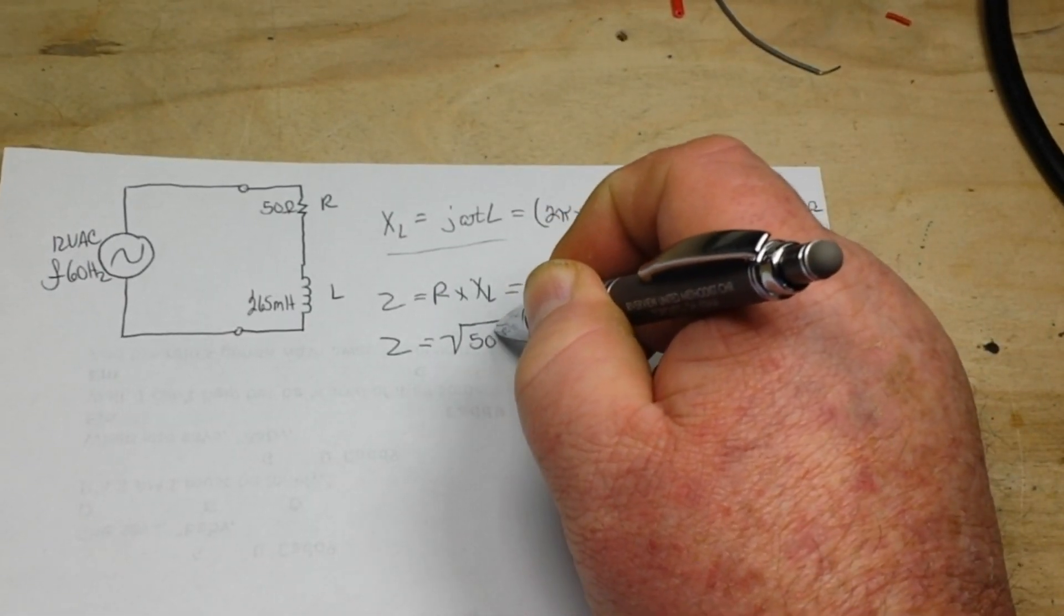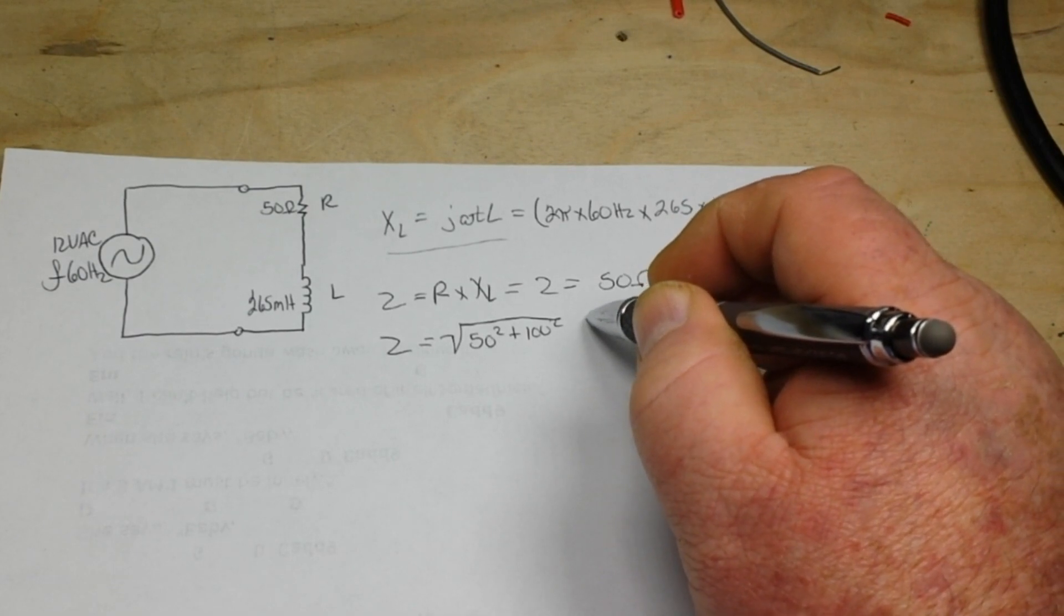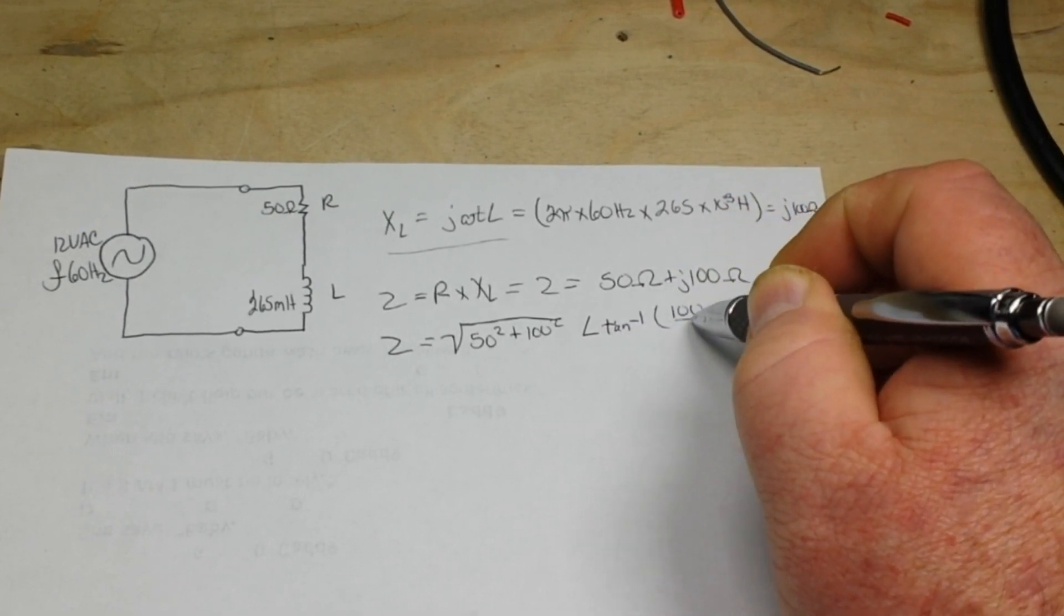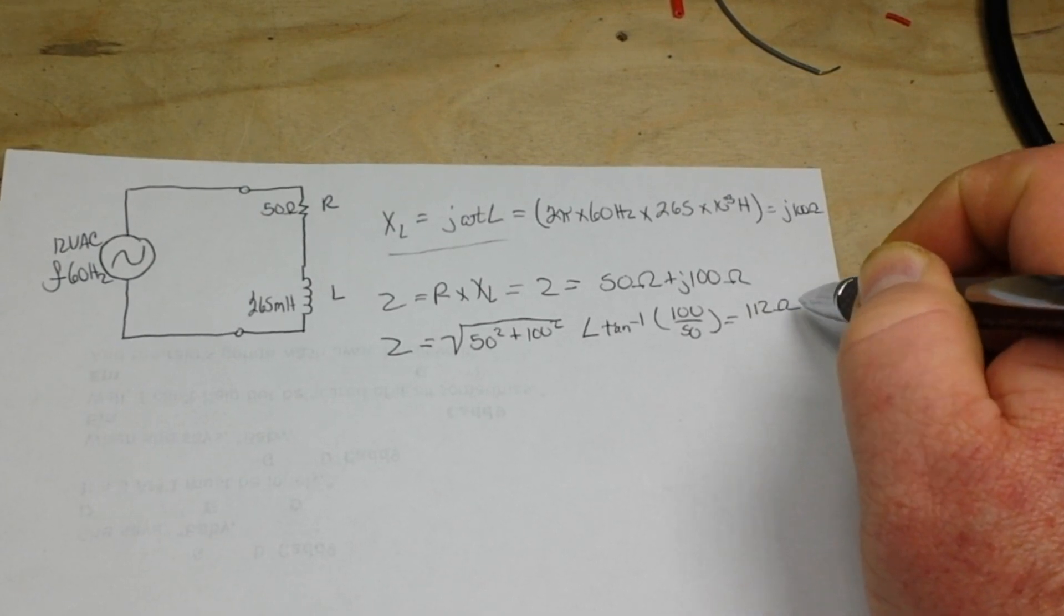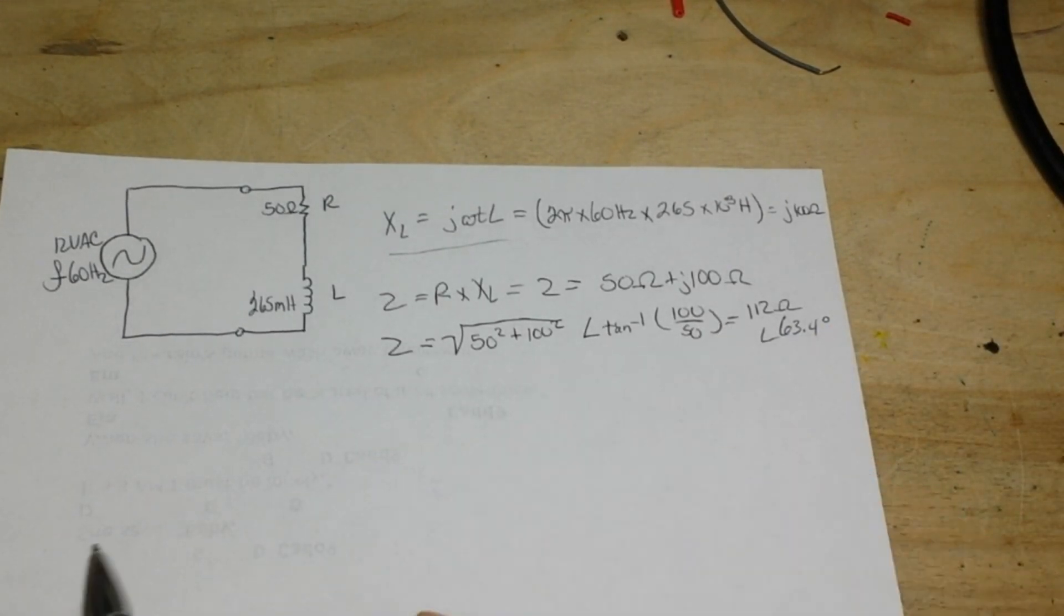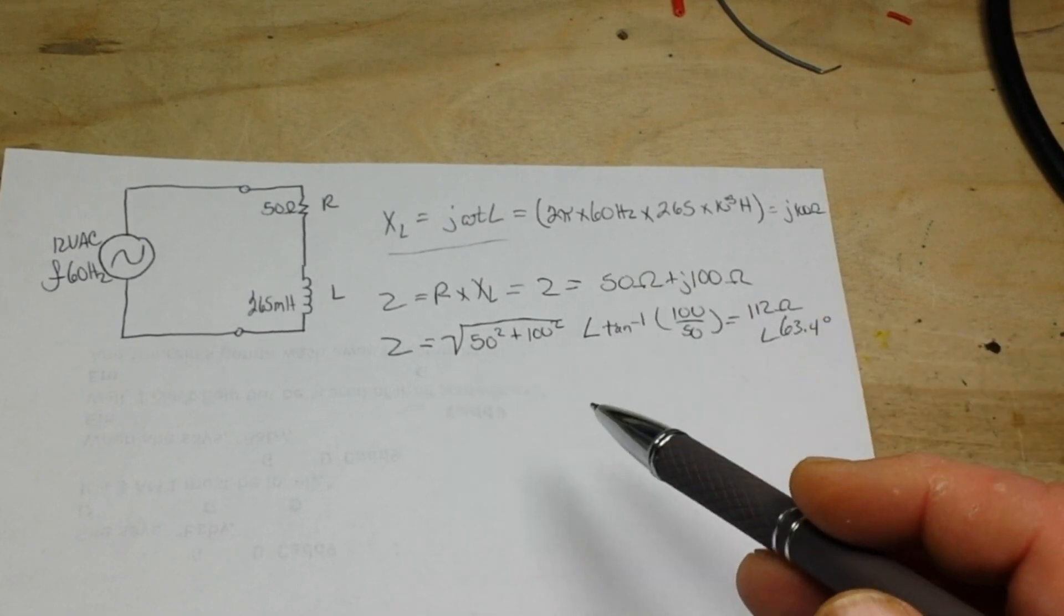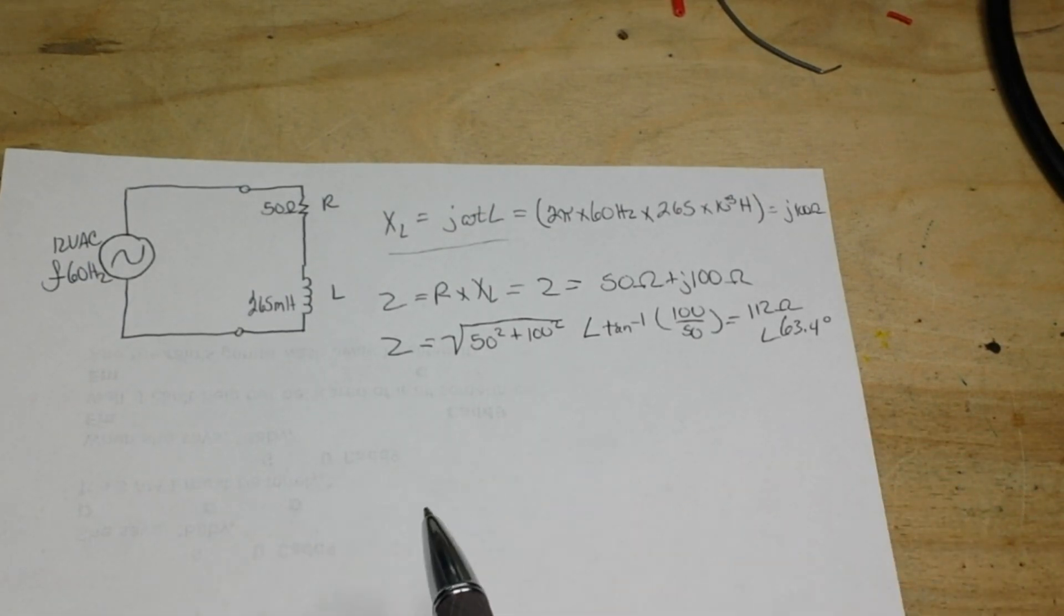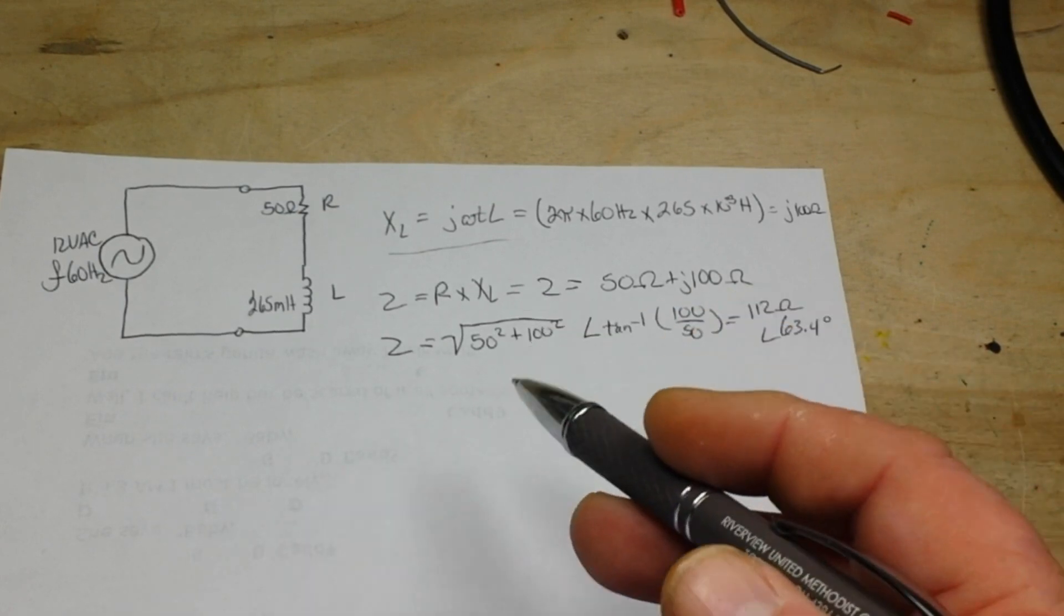If we want to go to the polar form, we simply say that Z is equal to the square root of 50 squared plus 100 squared, times the tangent inverse of 100 over 50, and that equals 112 ohms at a phase angle of 63.4 degrees. Now don't let the imaginary part fool you—there is actual resistance there, 112 ohms worth, but only a portion of this is real resistance; the rest is inductive reactance. If you're a fan of Big Clive, he always talks about real power versus apparent power—that's kind of where we're at here.